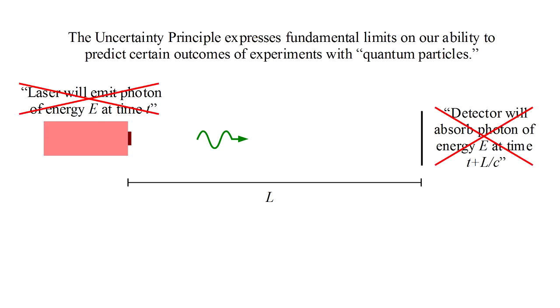You can reject those claims out of hand because we know that it's not possible to speak of the energy E except within an uncertainty delta E and the time within an uncertainty delta t, where delta E times delta t is no smaller than Planck's constant.